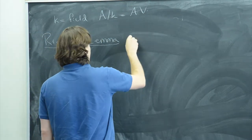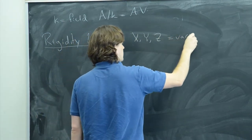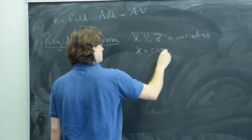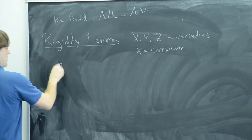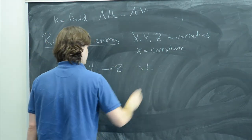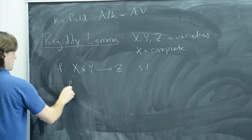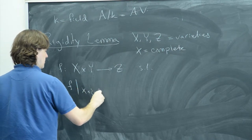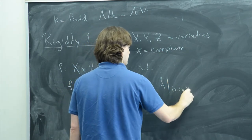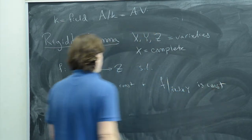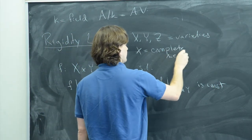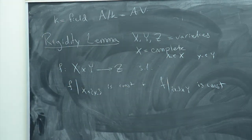The rigidity lemma says the following. Suppose you have varieties X, Y, and Z, and X is complete. If you have a map of varieties f from X times Y to Z, with the property that its restriction to each axis is constant — so f restricted to X times {y₀} is constant, and f restricted to {x₀} times Y is constant for some points x₀ in X and y₀ in Y — then f is constant.